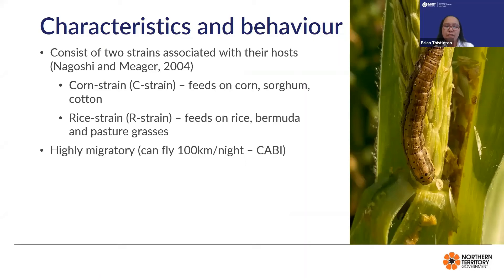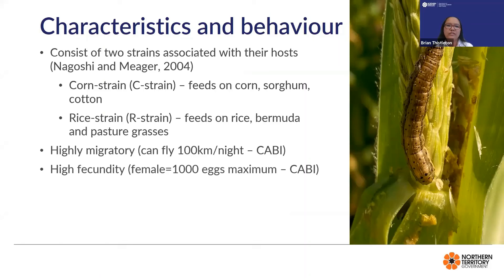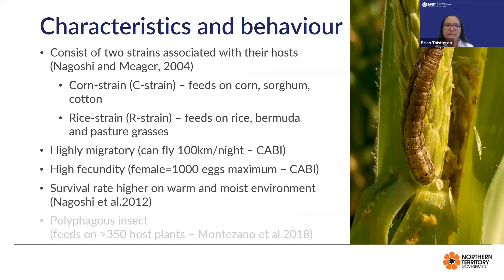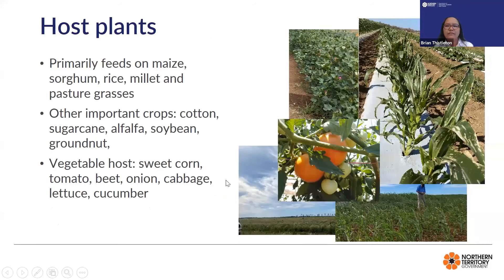Fall armyworm is highly migratory and has high fecundity — females are able to lay up to 1,000 eggs in a lifetime. Survival rate is higher in warm and moist environments. This pest is considered polyphagous because it feeds on more than 350 host plants. Primarily it feeds on maize, sorghum, rice, millet, and pasture grasses, but other important crops such as cotton, sugarcane, alfalfa, soybean, and groundnut have also been affected.